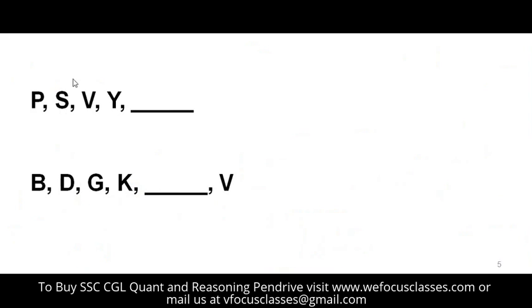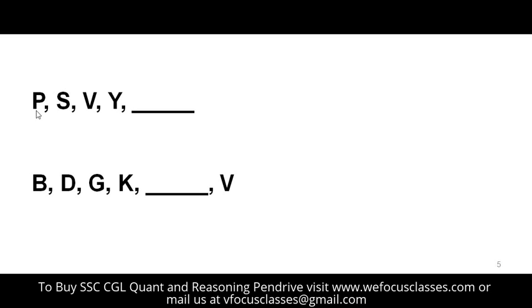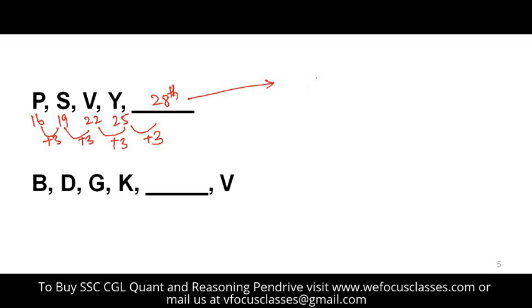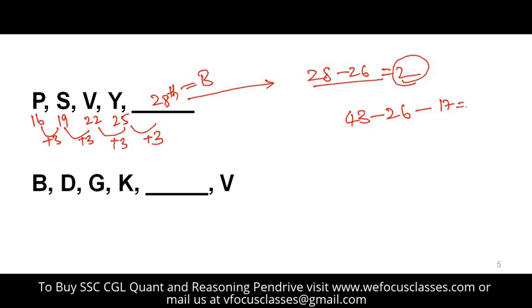This topic is similar to number series. To solve the first problem, give place values to each letter: P is 16, S is 19, V is 22, Y is 25. The difference between each is 3. So the next value is 25 plus 3 = 28. Since there is no 28th letter, subtract 26 to get 2, which is B. Similarly, for a 43rd letter, subtract 26 to get 17, which is Q.